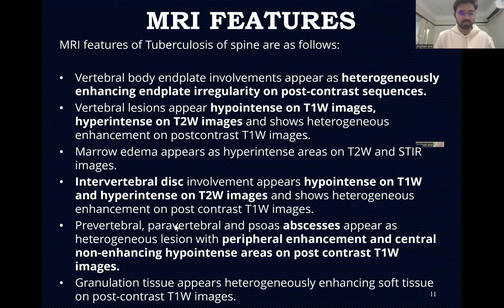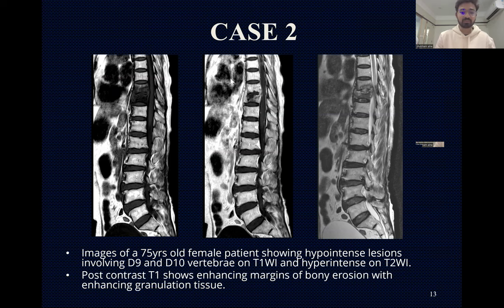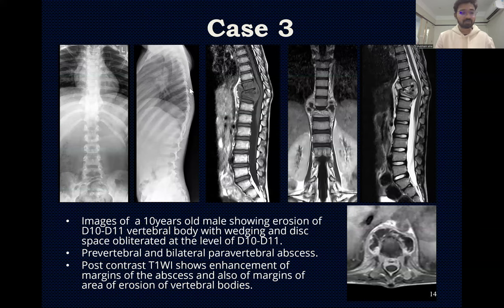Case two: Images of a 75-year-old female patient showing a hypointense lesion involving D9 and D10 vertebrae on T1-weighted images and hyperintense on T2-weighted images. Post-contrast T1 shows enhancing margins of the bony erosions with enhancing granulation tissue. Case three: Images of a 10-year-old male showing erosions of the D8 and D11 vertebral bodies with wedging of the disk space and obliteration at the level of D10 and D11. Pre-vertebral and bilateral paravertebral abscesses are seen. Post-contrast T1-weighted images show enhancement in the margins of the abscesses and areas of erosion of the vertebral bodies.